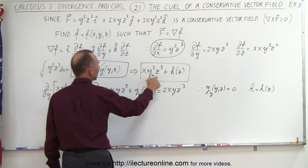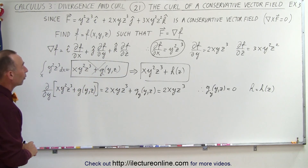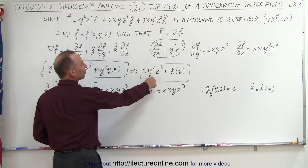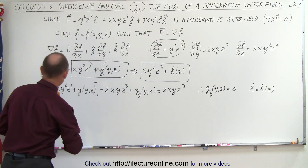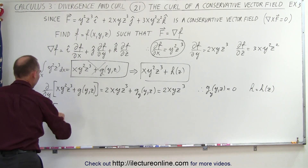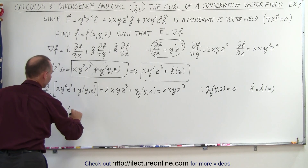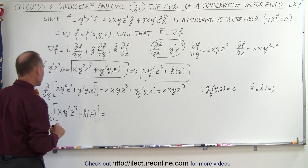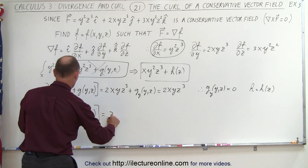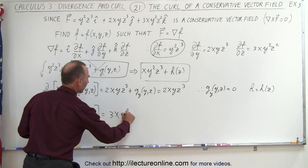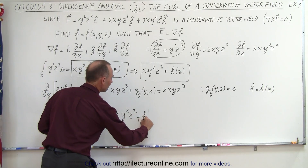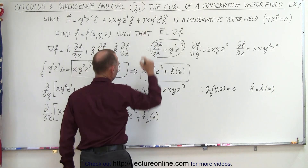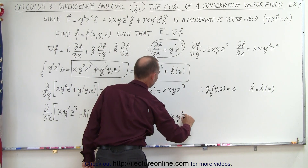This is now our next possibility for the function. So next, I'm going to take the partial derivative of xy²z³ plus h(z) with respect to z, and compare it to the known value 3xy²z². Taking that derivative gives us 3xy²z² plus the derivative of h with respect to z, and that must equal 3xy²z².